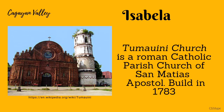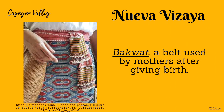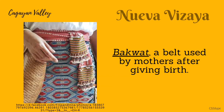Isabela is one of the largest provinces in the Philippines located in Cagayan Valley region. Tamwani Church is a Roman Catholic parish church of San Matias Apostol built in 1783. Nueva Vizcaya is located near Ifugao, Benguet, and Quirino. The Gadangs of Nueva Vizcaya are known for their craft and textiles. One of the clothes they make is the bakwat, a belt used by mothers after giving birth, usually adorned on the central portion with white beads as accent embellished in patterns that represent rivers and mountains.